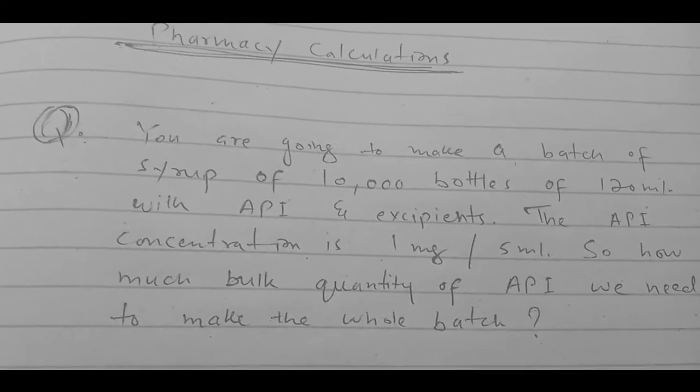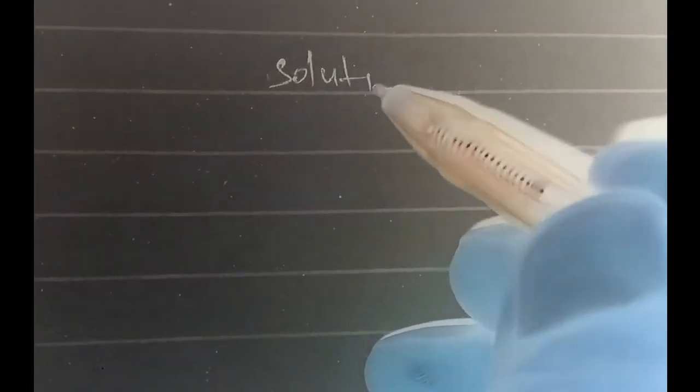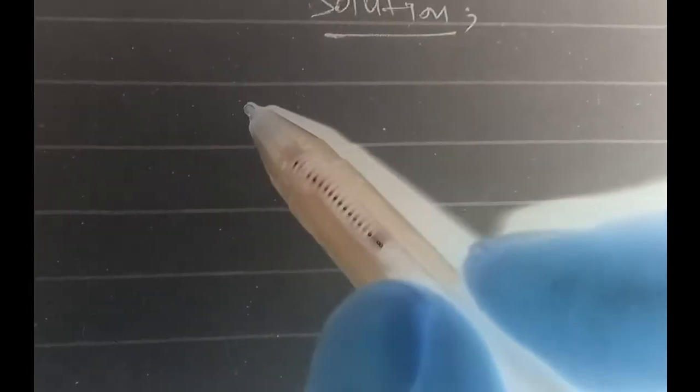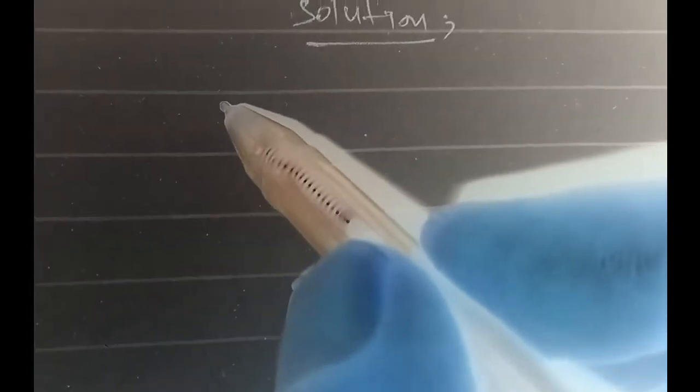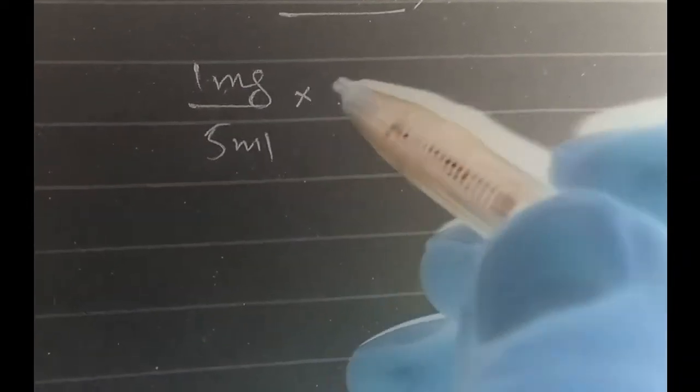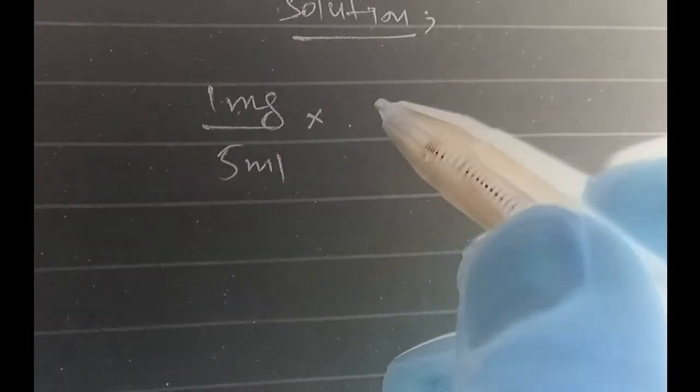So this is our solution here. As we know that the drug concentration per 5ml is 1mg, so we will want to find out its concentration in 120ml, as one bottle is 120ml.